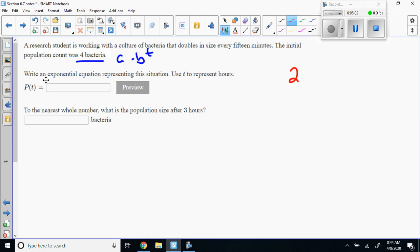We're going to write an exponential equation representing this situation in terms of hours. 15 minutes is 15 out of 60, which is 0.25 of an hour. In order to get our base, we know that it doubles every 0.25 of an hour. The easiest thing to do: if it's going to double, we'll do 2 raised to the 1 over 0.25.